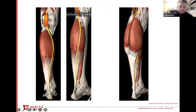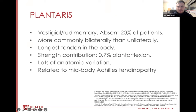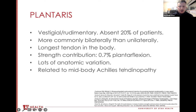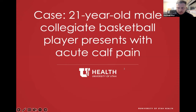It's interesting reading papers about the Plantaris because a good handful will use words like vestigial and rudimentary. It's thought it had more functional utility before humans became bipedal, and as a result of that evolutionary change, the muscle is absent in about 20% of patients. It's more common to be absent bilaterally than unilaterally. Interestingly, as the longest tendon in the body, it only has about 0.7% strength contribution to moving the ankle. It has a ton of anatomic variation and is related to mid-body Achilles tendinopathy.